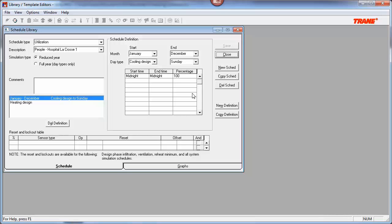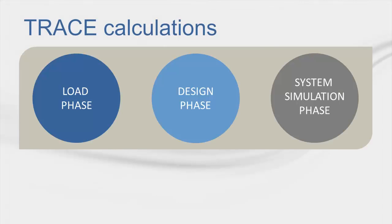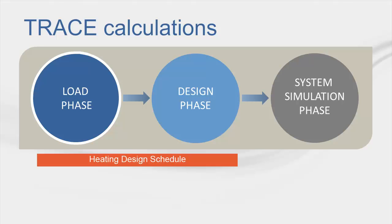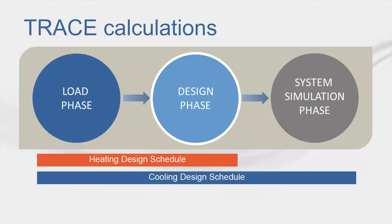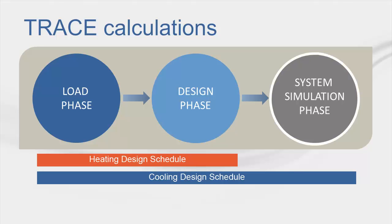Now let's understand how this newly created hospital schedule impacts your energy model. TRACE performs its analysis in three phases: load, design, and system simulation. During the load phase, TRACE takes building information — envelope and internal loads — combined with the weather to calculate peak loads, using design weather and design schedule day types. During the design phase, which designs the parameters of your HVAC systems, TRACE calculates additional loads such as ventilation and fan heat, also using design weather and design schedule day types. TRACE 700 then passes that information to the system simulation, which determines hourly loads and air flows for the HVAC system using the day types of design, weekday, Saturday, and Sunday.